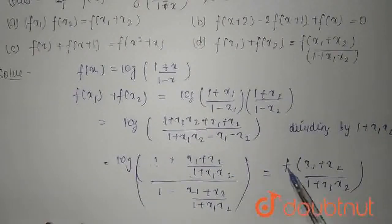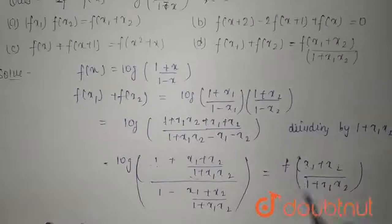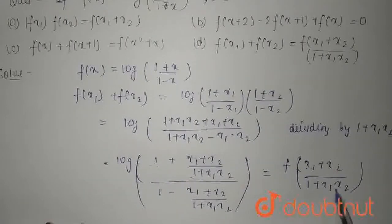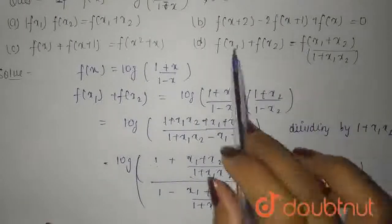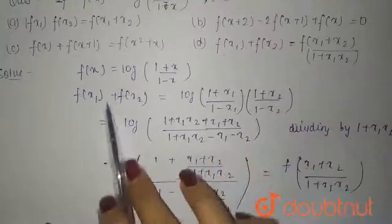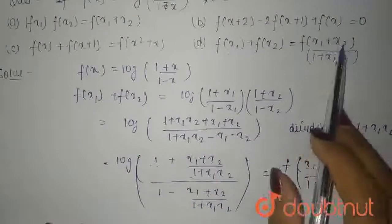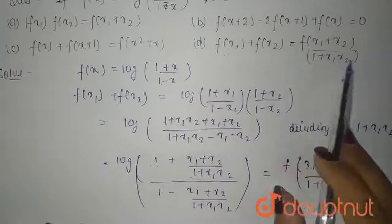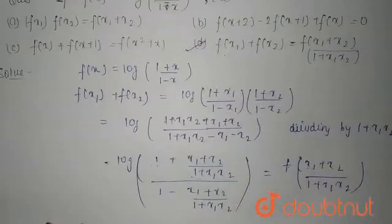So, the right answer is f of x1 plus x2 upon 1 plus x1 into x2, and that is f of x1 plus f of x2 is equal to f of x1 plus x2 divided by 1 plus x1 x2. And D is your right answer.